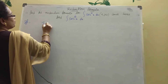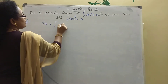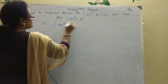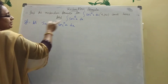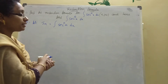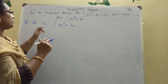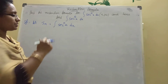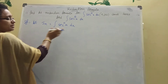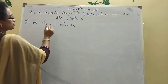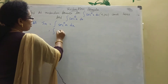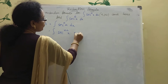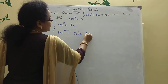Let I_n equal the integration of secant power n x dx. We are taking I_n equal to integration of secant power n x dx. Now we split it into two terms: integration of secant power (n minus 2) x into secant squared x dx.